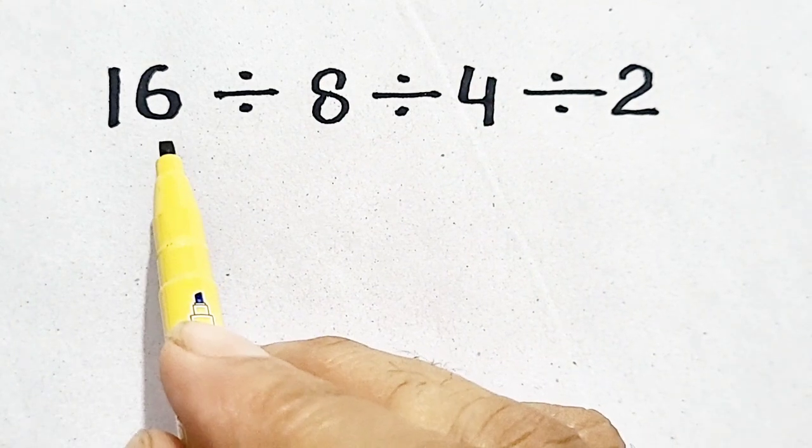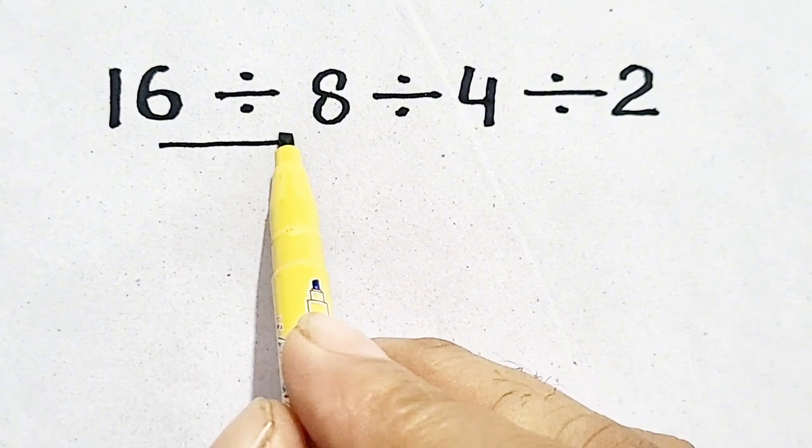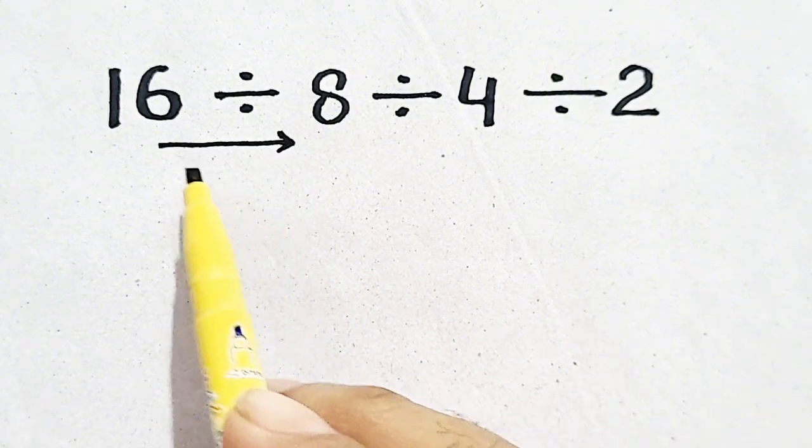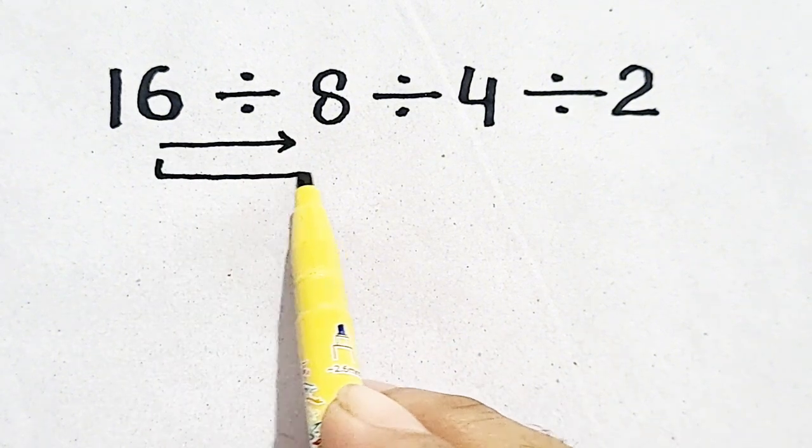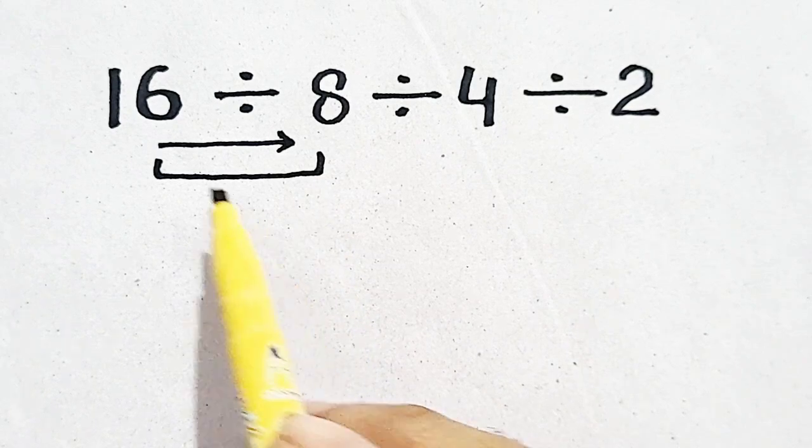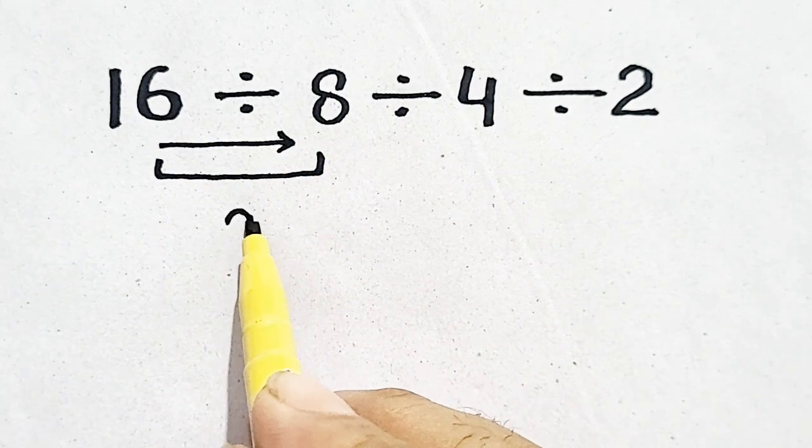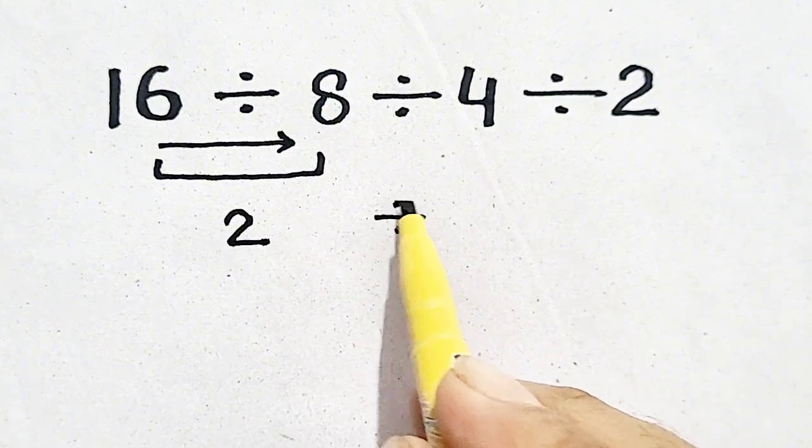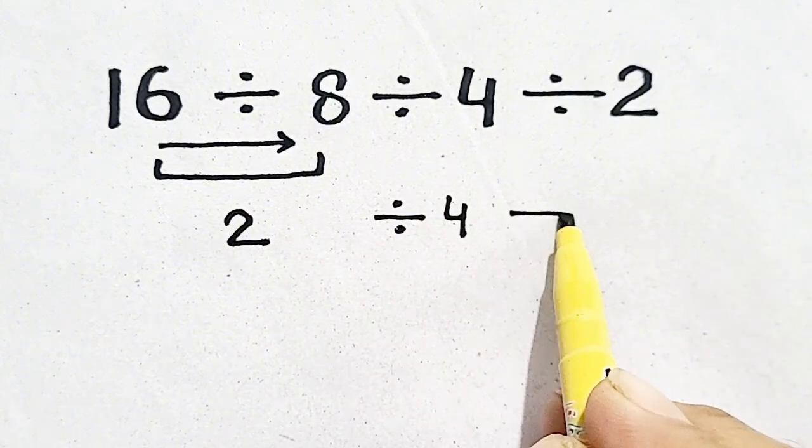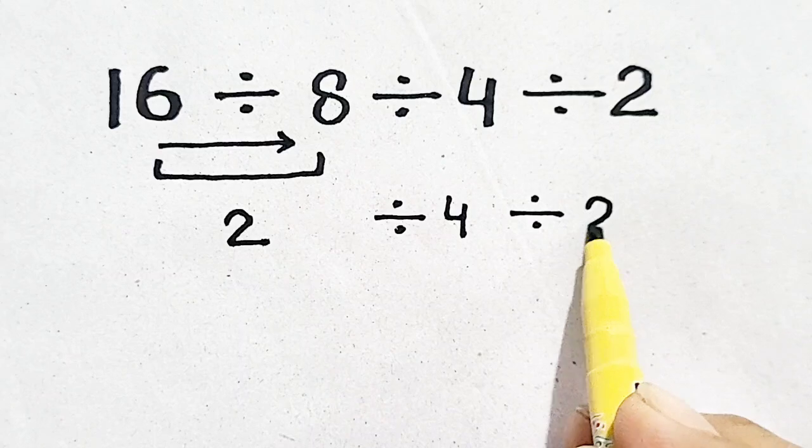Here we have to move from left to right, means we have to divide 16 by 8. 16 divided by 8, it is simple. We will get 2 divided by 4 divided by 2.